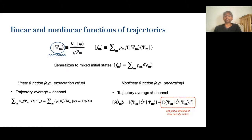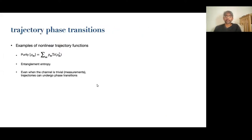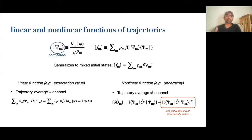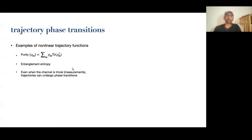On the other hand, if you take a non-linear function — anything as simple as a variance — it has a piece that's not a linear expectation value, and so it actually does care how you unravel the channel into trajectories. Historically, people have always thought about trajectories as just being an efficient way of numerically evaluating a quantum channel. But in the past few years, people have gotten interested in what happens in typical trajectories, and to study that, you look at nonlinear functions like the purity of a quantum state or its entanglement entropy. These things can undergo phase transitions even when the quantum channel is completely trivial — and those are the cases we're going to talk about today.